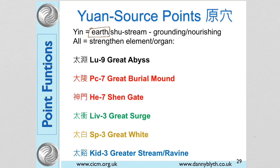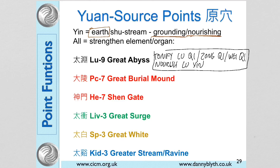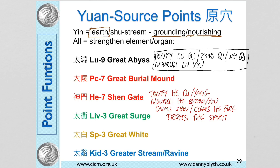Being Earth points, we would expect these points to be nourishing but also grounding and settling. Lung 9 tonifies all aspects of Lung Qi — Zhong Qi, Wei Qi — and nourishes Lung Yin.